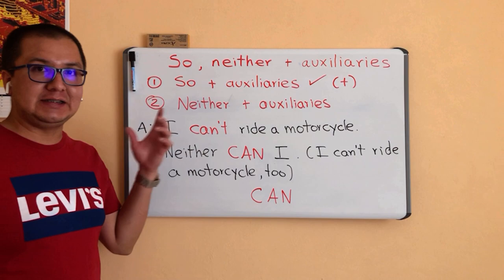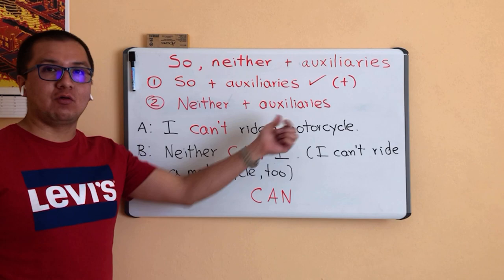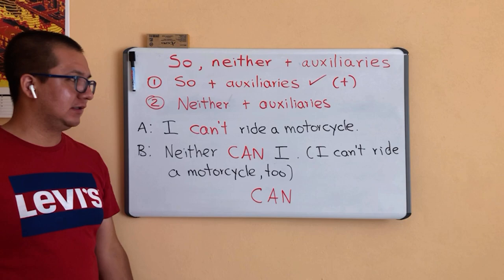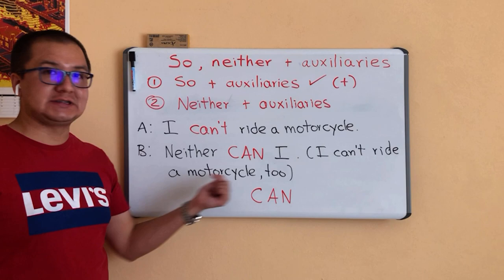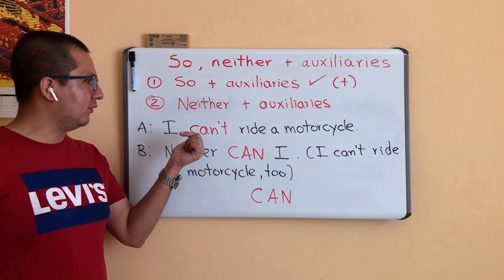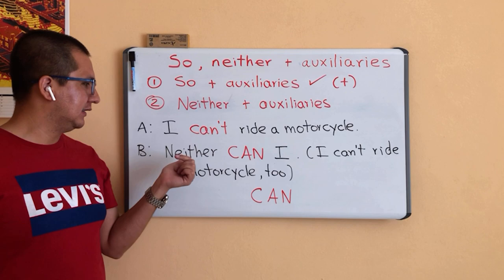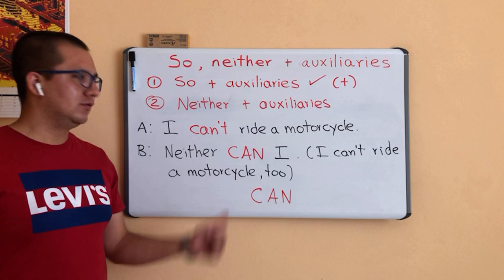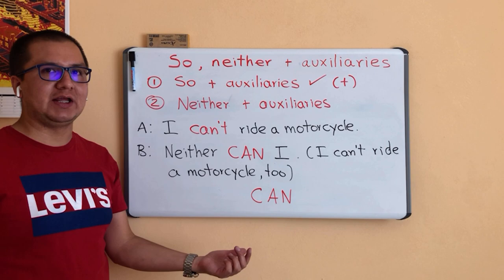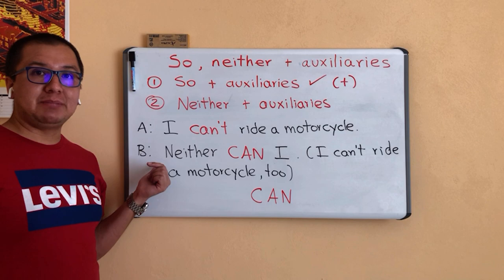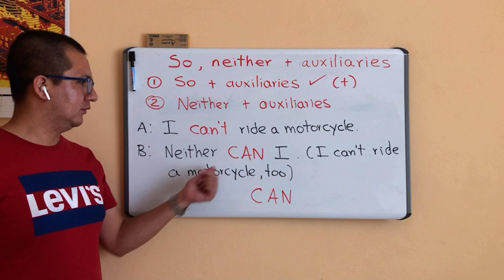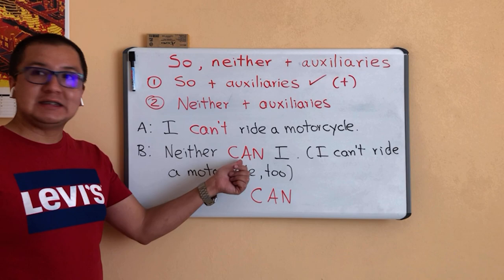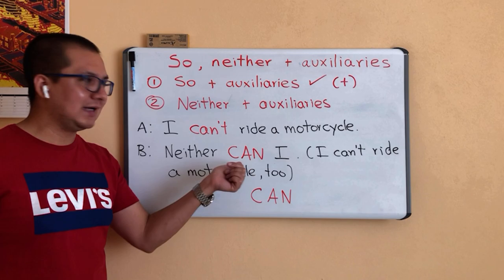One more example using this structure. Person A says: 'I can't ride a motorcycle.' Person B replies: 'Neither can I,' meaning: I can't ride a motorcycle too. Look at the word in red: CAN'T — a negative sentence. And in the answer: 'Neither can I.' CAN is the modal auxiliary used in affirmative form. Person B has the same opinion as person A, but in negative. Don't forget: the auxiliary always goes in affirmative form in the response.